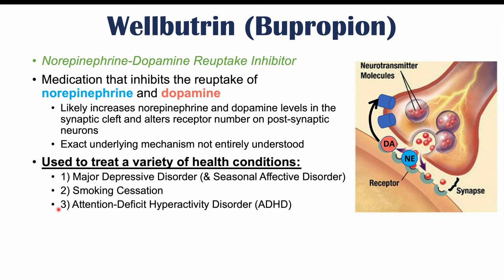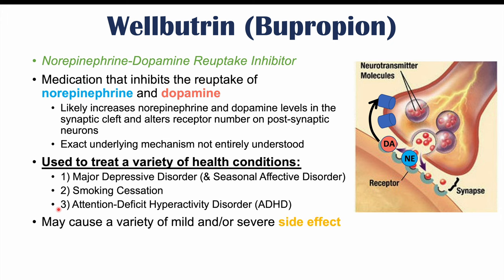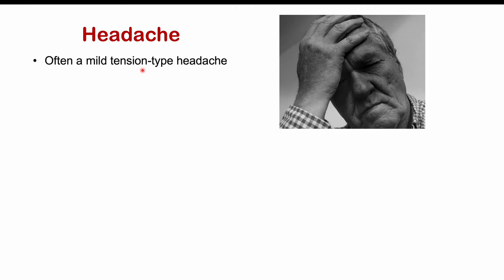Now the problem with this medication is that because it can increase levels of norepinephrine and dopamine in the synapse, it may cause a variety of mild and/or severe side effects. One of the most common side effects of Wellbutrin or bupropion use is a headache. This is often a mild tension type headache, mild in severity, and it's usually an initial side effect — once you start taking it, you can have this mild headache and it will usually resolve over time.